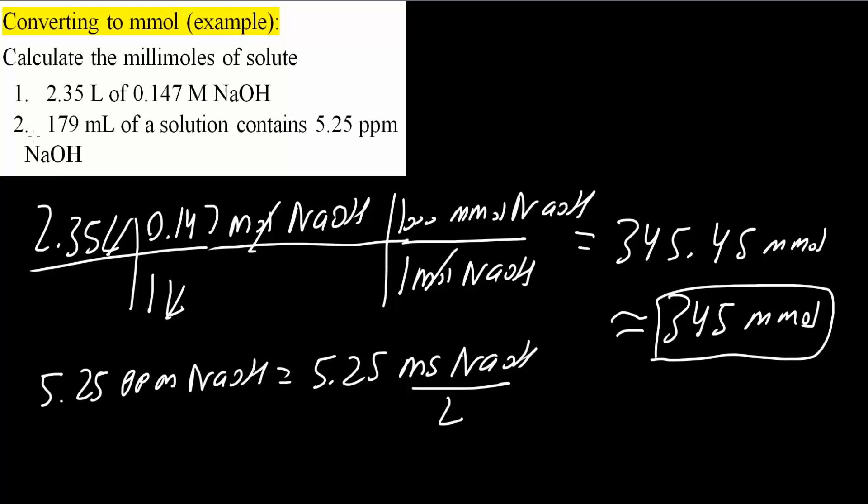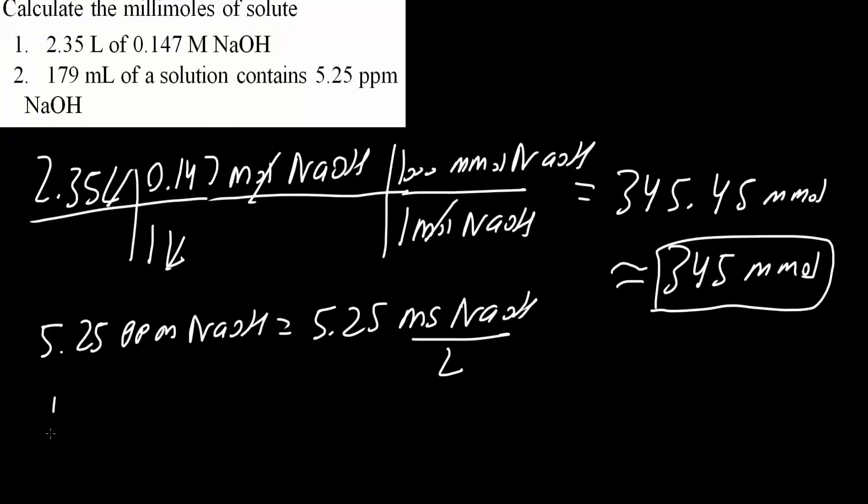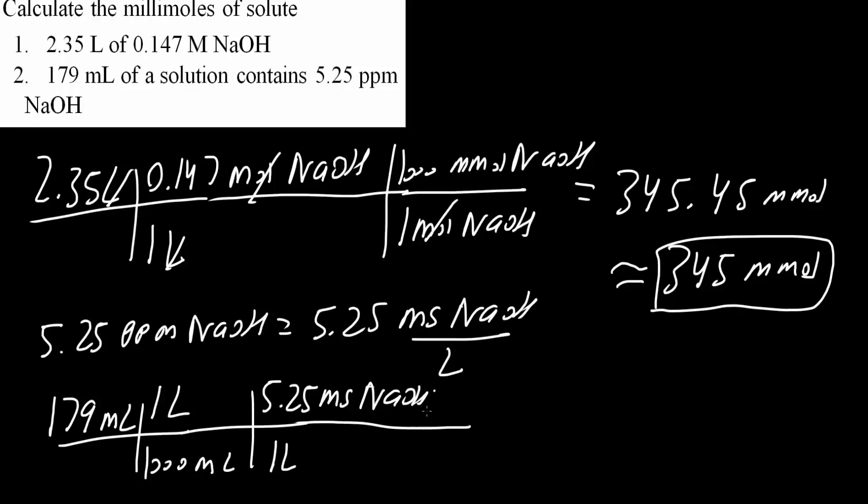From here, we will apply 179 to ultimately get millimoles. So we can say 179 milliliters. We know that 1,000 milliliters is equal to 1 liter. And we know that 1 liter is equal to 5.25 milligrams of NaOH because it says so right here. From here, we convert milligrams into grams. 1,000 milligrams is equal to 1 gram of NaOH.